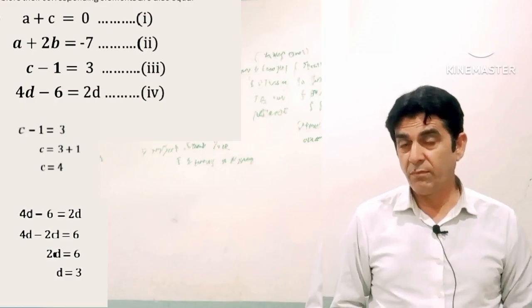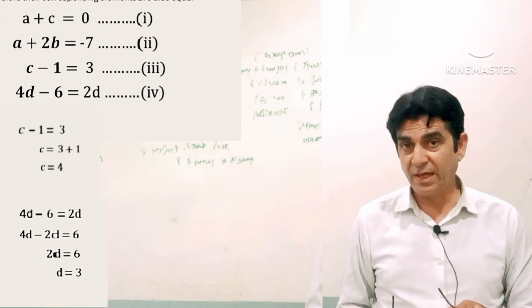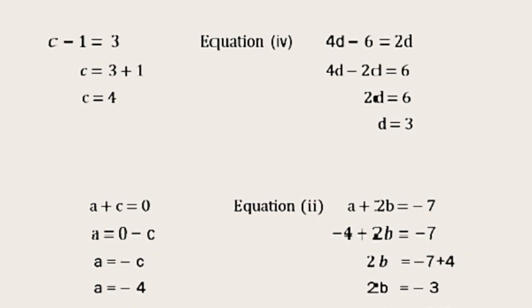Now the next two variables in which we have to put the values. In this a plus c equals 0, we have known the value of c, which is 4, put there. So a plus 4 equals 0, which means a equals -4.